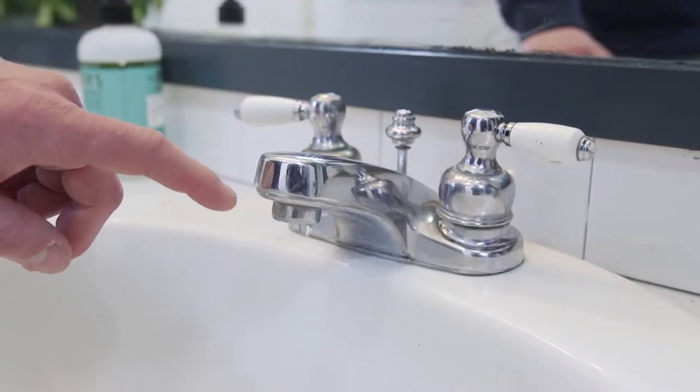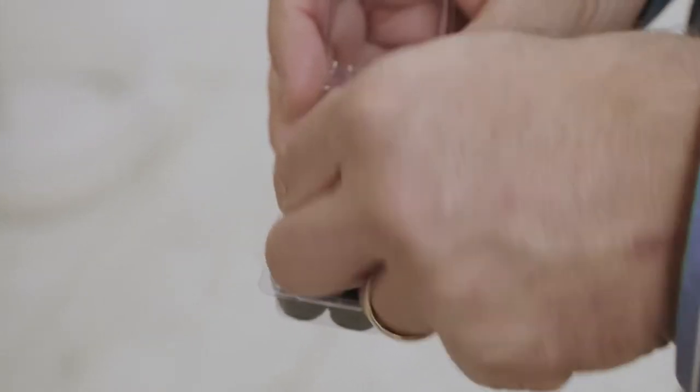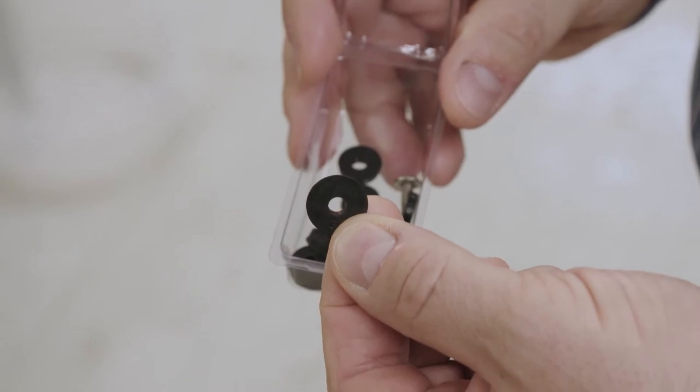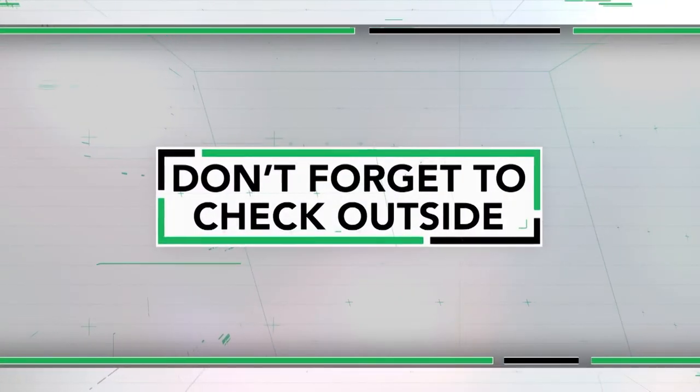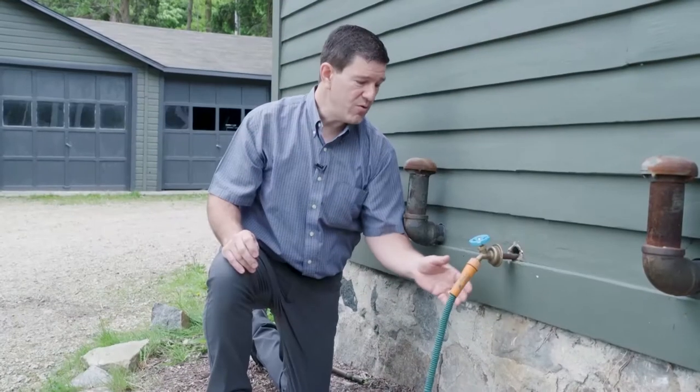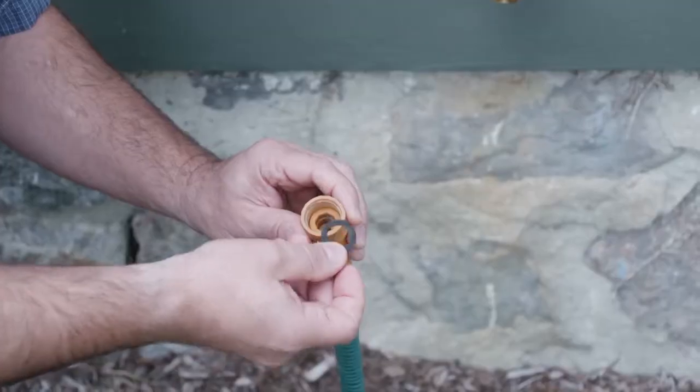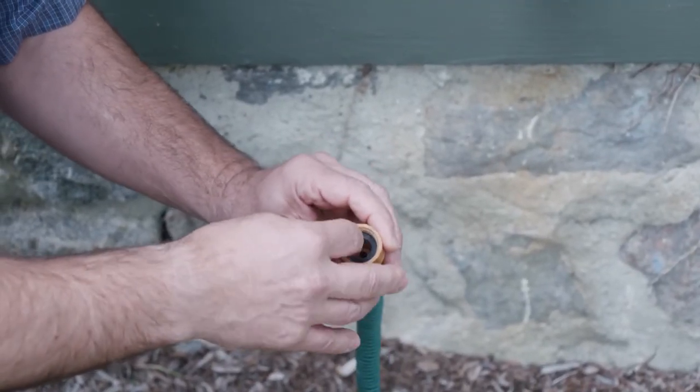Leaky faucets usually just need a new gasket or a washer. Once you replace it, the leak should be fixed. And don't forget to check for leaks outside the house. If you have a hose connection that's leaking, replacing the washer can create a tighter fit.